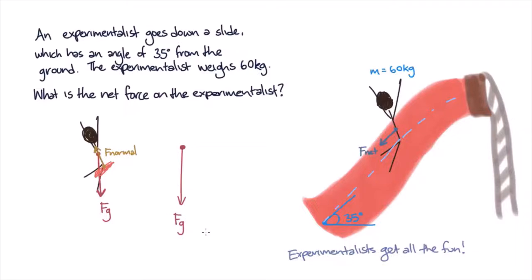The net forces on the experimentalist cannot be neatly summed in the same direction, as they're acting at different angles. So let's break up the gravitational force into a component along the ramp and a component perpendicular to the ramp.